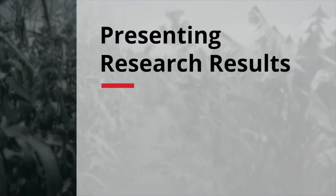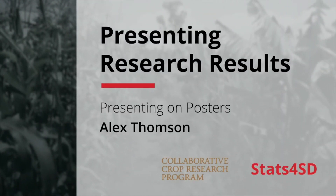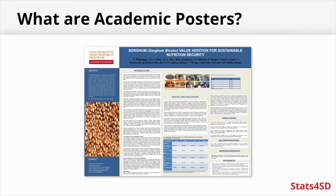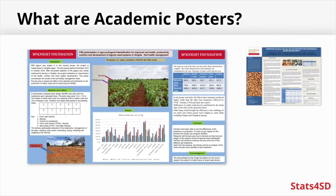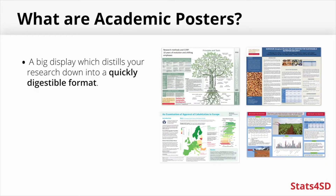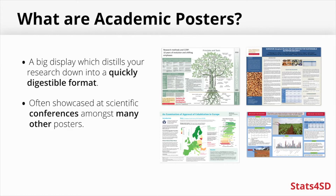In this video, we will be looking at the aims and principles of using academic research posters to display and disseminate information about your studies and your key findings. Academic research posters are large displays which attempt to condense your study down into a quickly digestible format. They will usually try to focus on just a few crucial findings that come out of your research, so as not to bombard your audience with information. They are often showcased at scientific conferences amongst many other posters within a limited time frame, so readers will have many other posters to see, not just yours, although there are increasing numbers of poster conferences moving online as well.